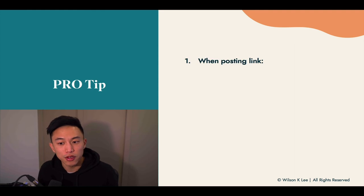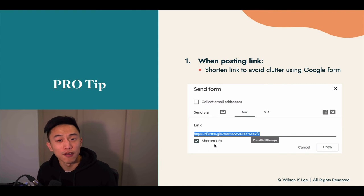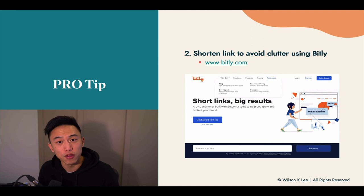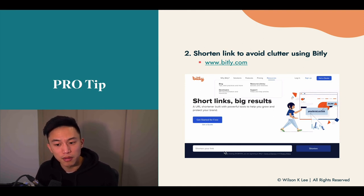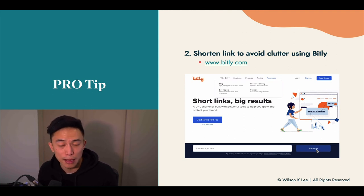A pro tip for when you're posting the link: make sure you select shorten URL, because this avoids clutter and just becomes much easier on the eyes. If you don't have that feature, shorten the link using bitly.com. Go to bitly.com, copy and paste your Google Form link, and click shorten. You'll have a very short link which you can put onto your Instagram profile.